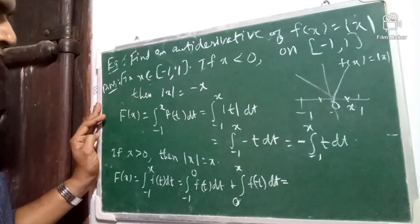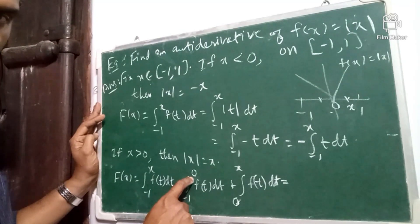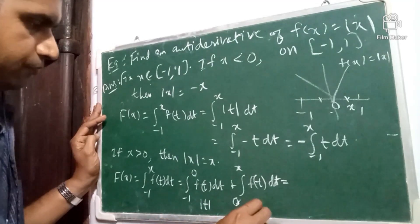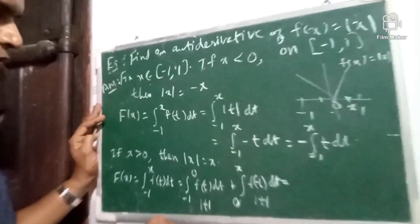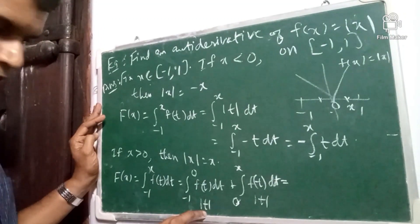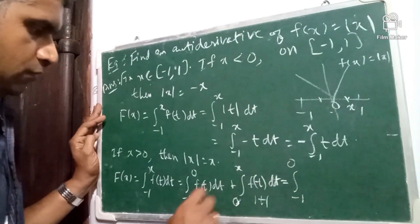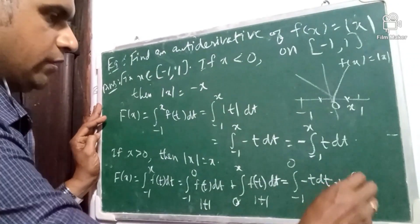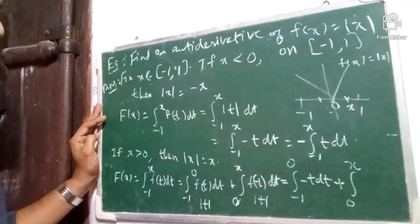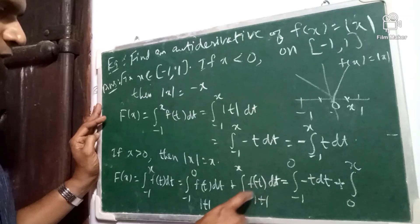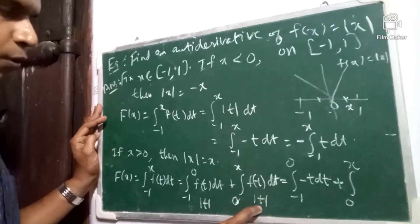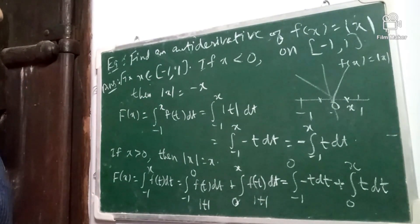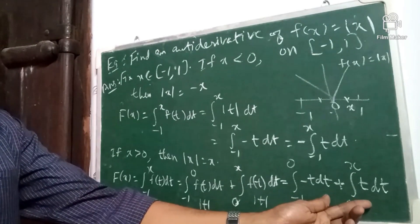Now, in the first integral t varies from minus 1 to 0, so t is negative, and f of t is mod t, so mod t is minus t. In the first integral it is integral minus 1 to 0 of minus t dt, plus in the second integral, t varies from 0 to x, so t is positive, and mod t is t. So we have plus integral 0 to x of t dt. This is the antiderivative when x is greater than 0.